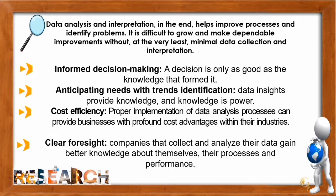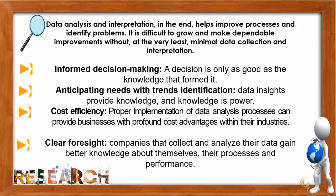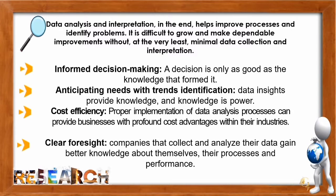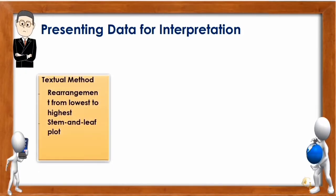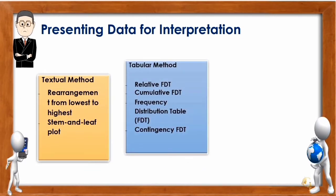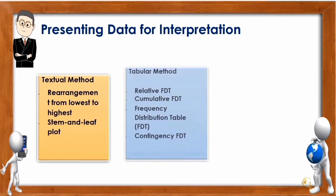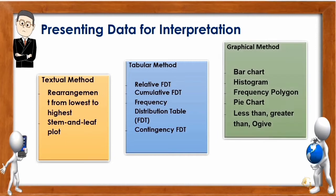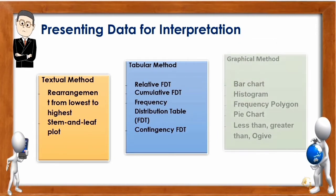It's important to be informed in decision making — a decision is only as good as the knowledge that formed it. We need to anticipate needs through trends identification, as data insights provide knowledge. For cost efficiency, proper implementation of data analysis processes provides business with profound cost advantages. And for clear foresight, companies that collect and analyze their data gain better knowledge about themselves and their performance. Now let's proceed to presenting data for interpretation. We have textual method — rearrangement from lowest to highest and stem-and-leaf plot. Another is tabular method, including frequency distribution table and contingency table. And the graphic method includes bar chart, histogram, frequency polygon, pie chart, and ogive.